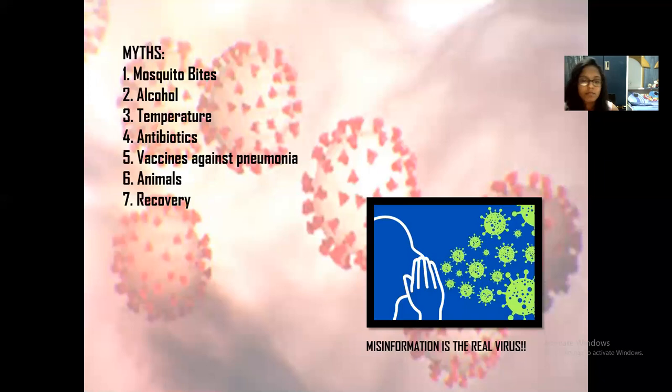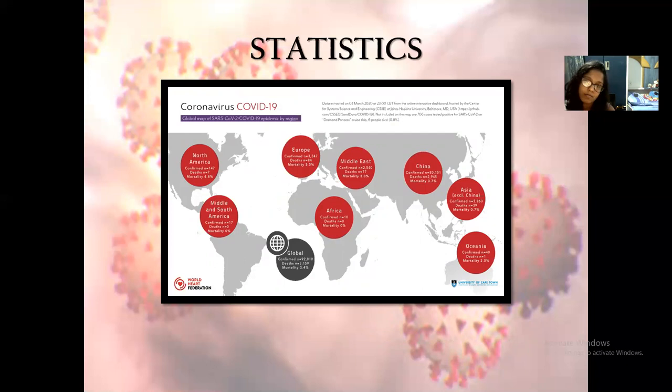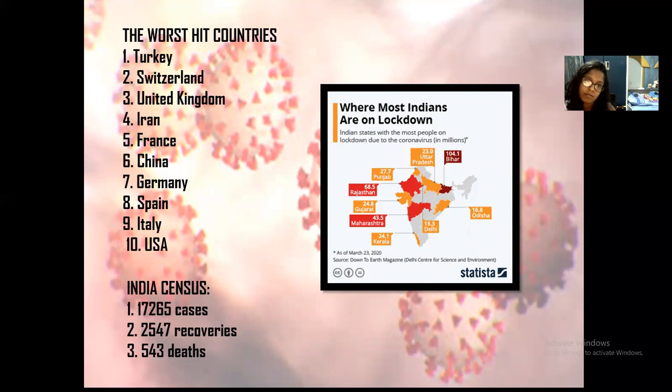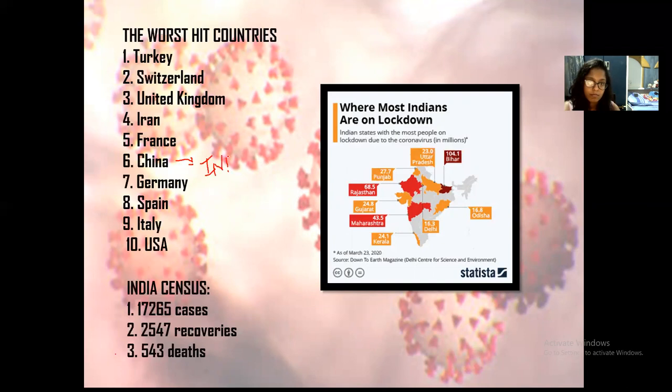The world census from March 3rd shows that cases have spiked significantly since then. The top 10 worst-hit countries are Turkey, Switzerland, United Kingdom, Iran, France, China, Germany, Spain, Italy, and USA. In India, the census from April 21st shows 70,265 cases, 2,547 recoveries, and 543 deaths, with Maharashtra being the worst-hit state.